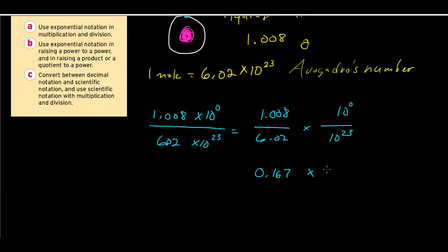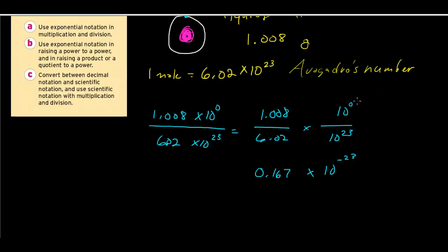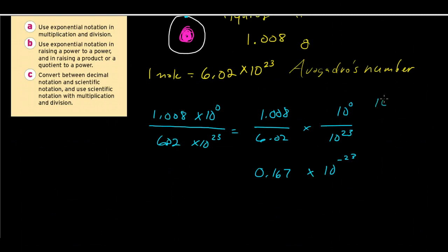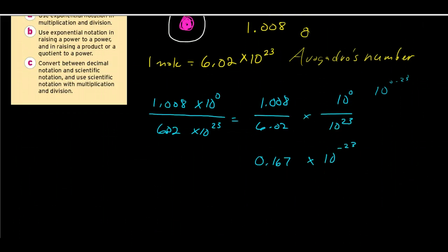And this will be 10 to the negative 23rd power. If you looked at your powers of x, your rules of exponents prior to this video, you would know that in order to get this number, I would have to subtract. This is equal to 10 to the 0 minus 23rd power. And that will give me the exponent on the 10 there. And we're not quite there in writing this number.